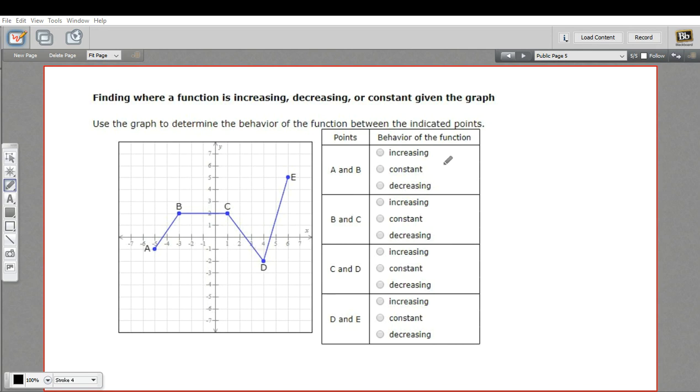So let's see if we can answer these questions now. Use the graph to determine the behavior of the function between the indicated points. The first one is between points A and B. From A to B, it's definitely going uphill, so this is increasing.